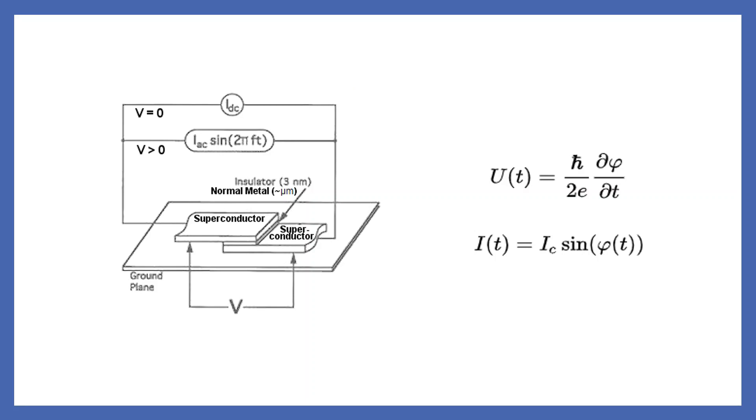When voltage equals zero, phi is constant so the current will also have a constant value. If the voltage has a constant value larger than zero, the phase will vary linearly with time and there will be an AC current with amplitude IC.